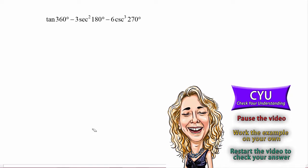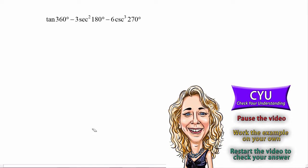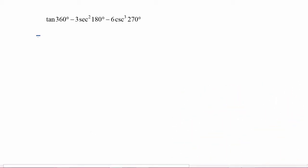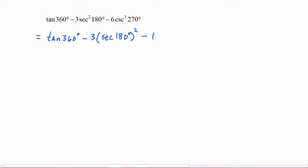Okay, let's see how you did. We have tangent of 360 degrees minus three times the secant of 180 degrees squared, minus six times the cosecant of 270 degrees cubed.